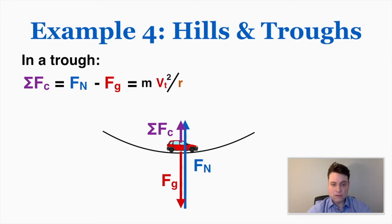To summarize the force relationships: at the bottom, centripetal force equals normal minus gravity; on the side, centripetal force equals the normal force, and gravity equals friction; at the top, centripetal force equals normal force plus gravity. At the top, the normal force and gravity are both pointing down, so they work together to create that centripetal force.